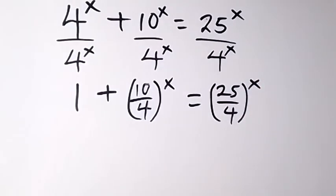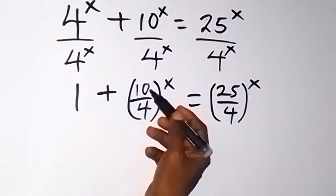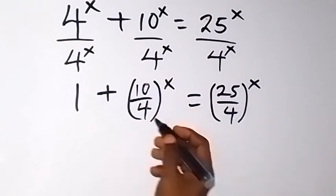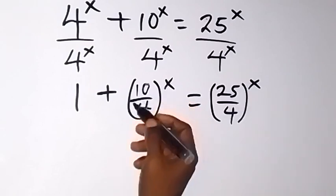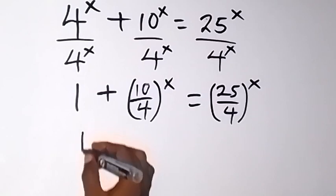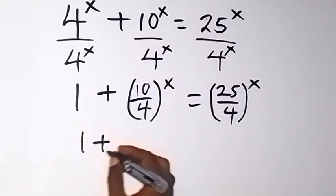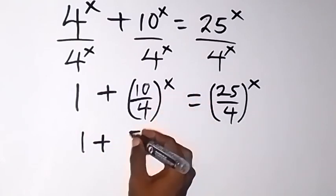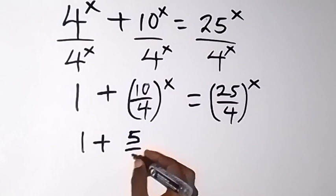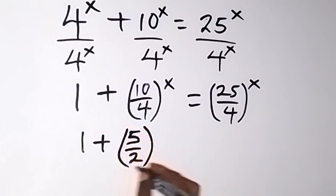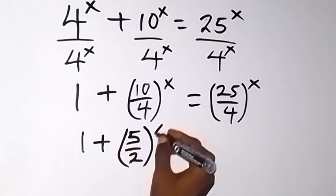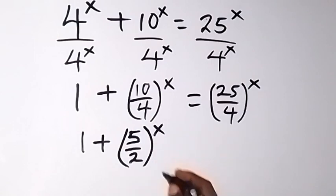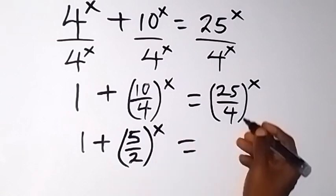From here, we can reduce this and divide by 2. This will remain 5 over 4. So we have 1 plus 5 over 2 — that's 5 over 2 — because when 2 goes, we mean 5 then 2 here, then raised to power x equals to the right-hand side.